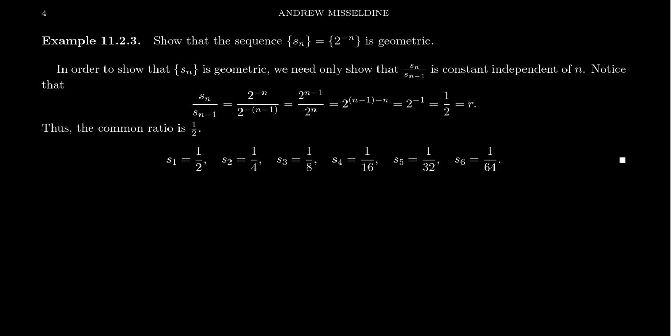By exponent rules, because we have 2^(n-1) on top and 2^n on the bottom, we can subtract the exponents. We get 2^(n-1-n). The n's cancel out, we're left with 2^(-1), which is 1/2. This number doesn't depend on n whatsoever. This number 1/2 is independent of n. This is our constant ratio of 1/2, showing that this sequence is geometric with constant ratio 1/2.